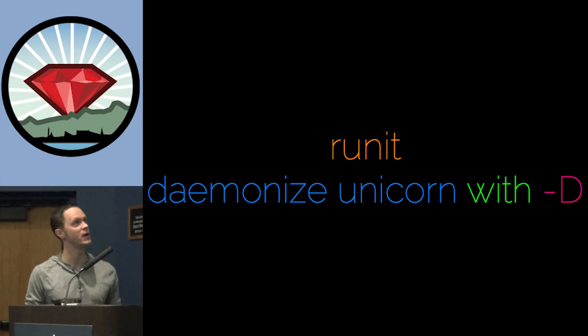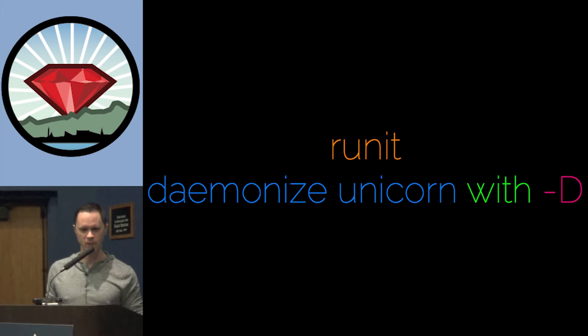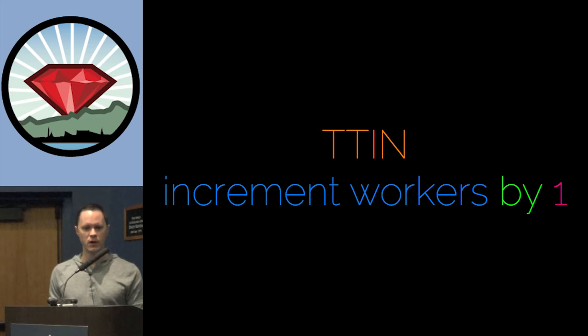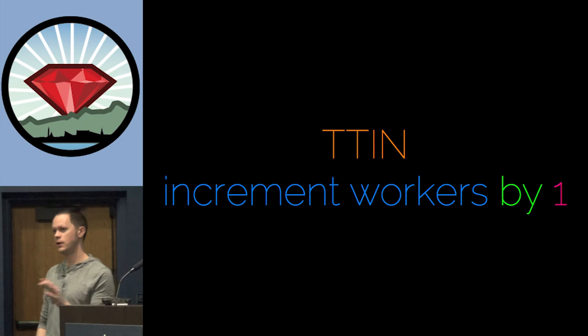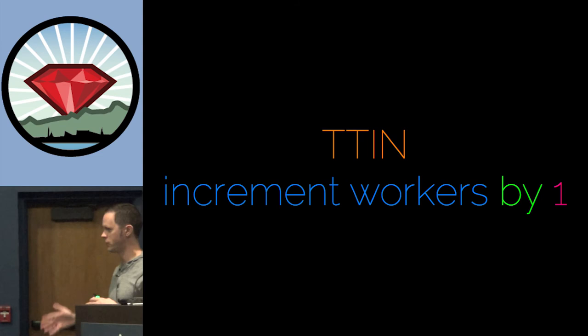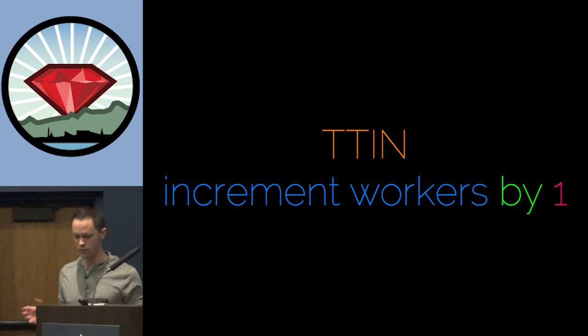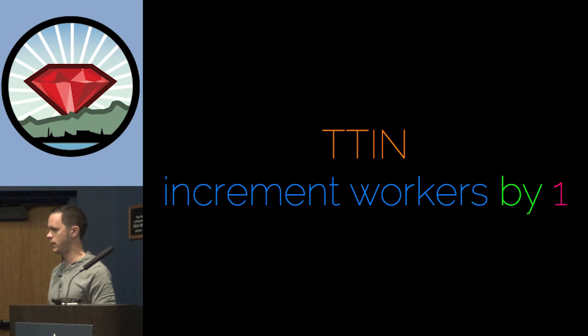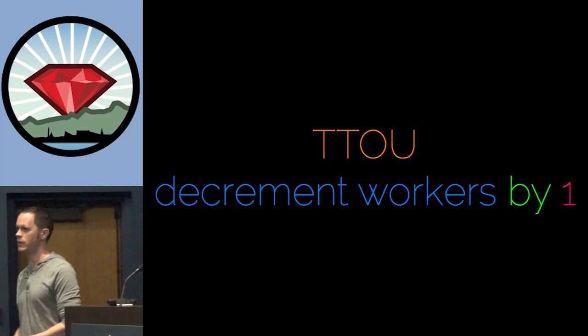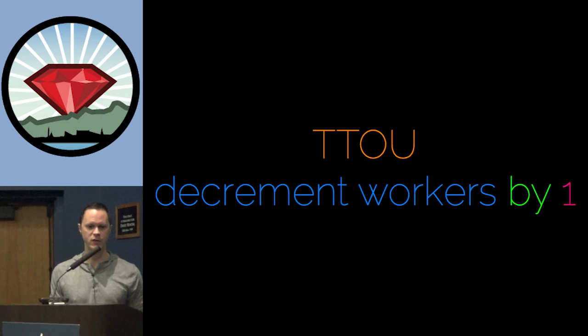There are also other cool things besides doing zero downtime with Unicorn. If you send your Unicorn process the TTIN signal, it will increment the number of workers available for handling requests in your application — without downtime. It just starts up another worker automatically, like Instascale in your application. We've used that in a number of instances where we just needed to add capacity for a short burst. And the opposite — sending a TTOU signal to the process — will dial back the number of workers. Really nice that you can do that without any restarts.